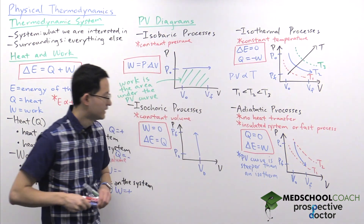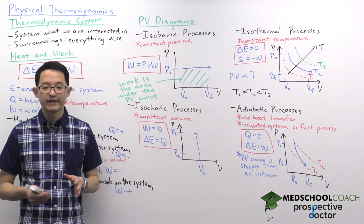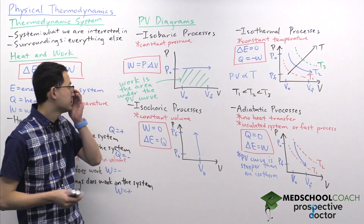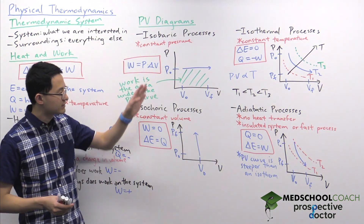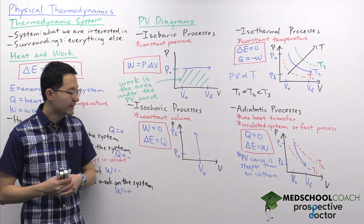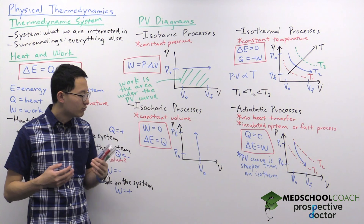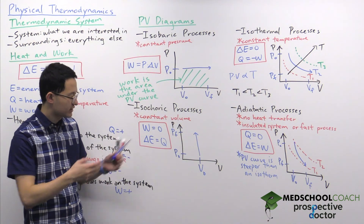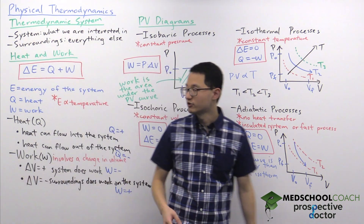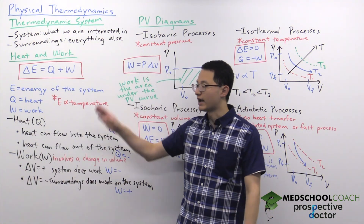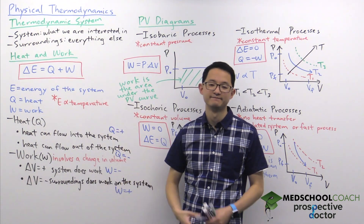Those are the four thermodynamic processes — isobaric, isochoric, isothermal, and adiabatic — and how we can represent them on PV diagrams, as well as relate them to energy, heat, and work.